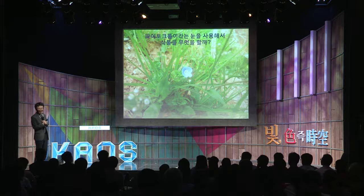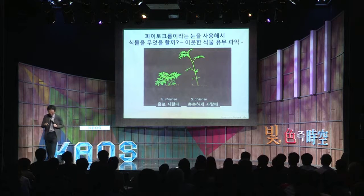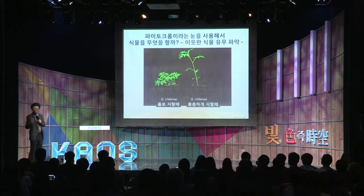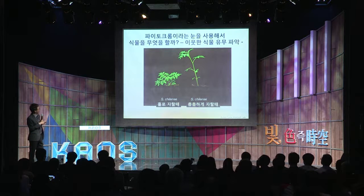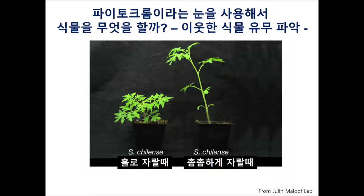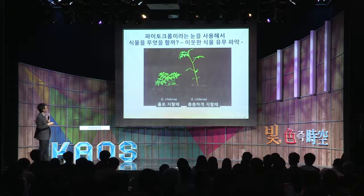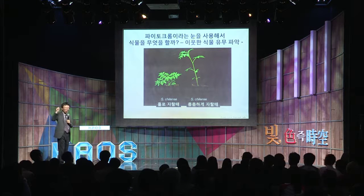식물도 자기 옆에 식물이 있다는 걸 안다는 걸 보여드리도록 하겠습니다. 이것은 토마토입니다. 토마토를 혼자 키우면 보통 넓직하고 자리를 많이 차지하면서 키가 별로 안 큰 상태로 자라요. 그런데 토마토를 옆에 다른 토마토와 같이 심어두면 넓직하게 퍼져 자라는 게 아니고 위로 쭉 자라 올라가요. 나무가 혼자 있으면 가지가 옆으로 쫙 퍼지면서 넓게 자라고, 숲속에 있으면 그냥 쭉 위로 자라죠. 옆에 토마토들이 촘촘하게 있으면 길게 자라는 건, 뭔가 방법으로 옆에 다른 식물이 있구나 이걸 아는 겁니다.